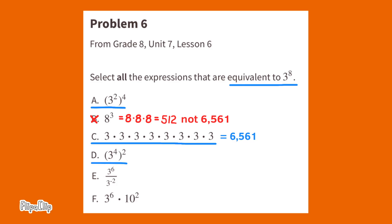D: 3 to the 4th to the power of 2 — that is equal to 3 to the power of 8. E: 3 to the 6th power over 3 to the 2nd power — that equals 3 to the 8th power. F: 3 to the 6th power times 10 to the 2nd power equals 30 to the 8th power, so that does not equal 3 to the 8th power. The correct answers are A, C, D, and E.